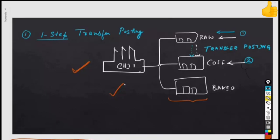So what have we learned? There is something called transfer posting, which is a function in MIGO that you can do to transfer goods from one storage location to another within the plant. This step is called one-step transfer posting. You might ask: is there a two-step transfer posting? Well, there is, and when do you use two-step versus one-step? Let's see.